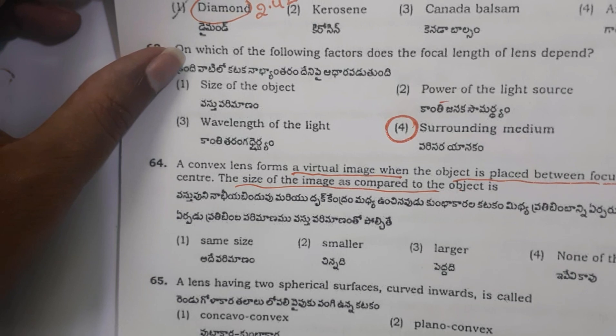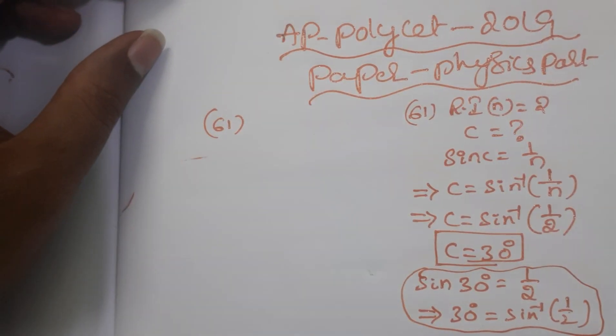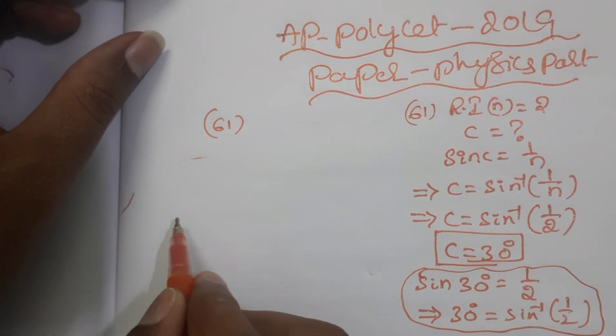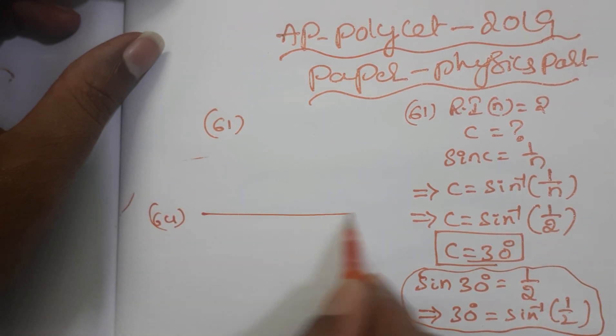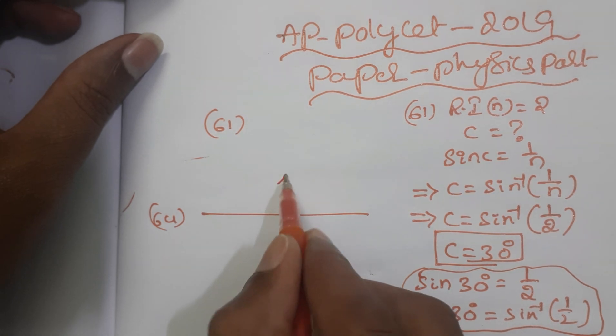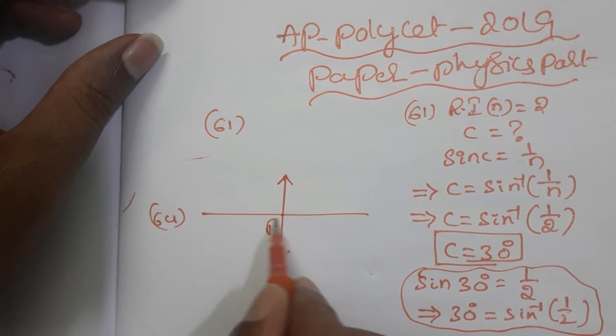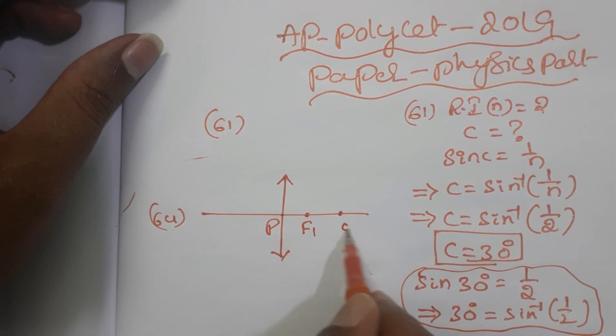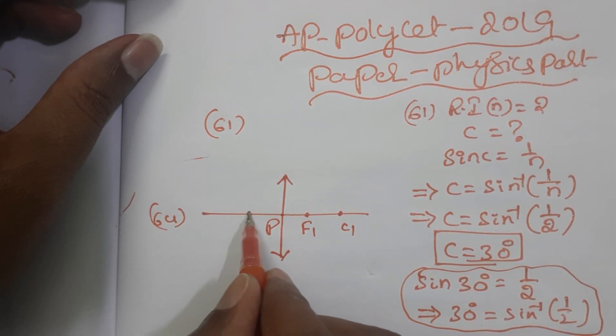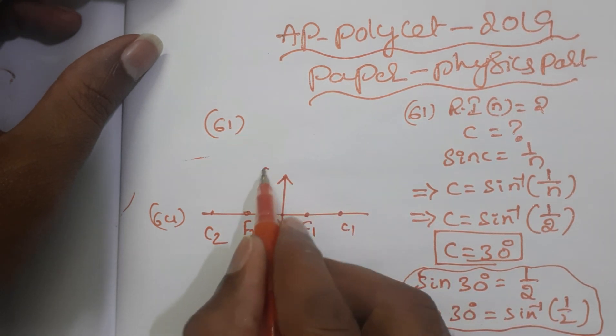For question 64, this is the symbol for convex lens and this is the principal axis. It is optic center, focal point f1, center of curvature c1, focal point f2, center of curvature c2. Here is the object.